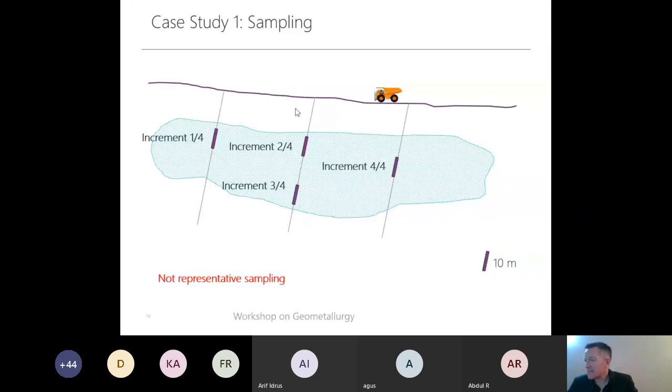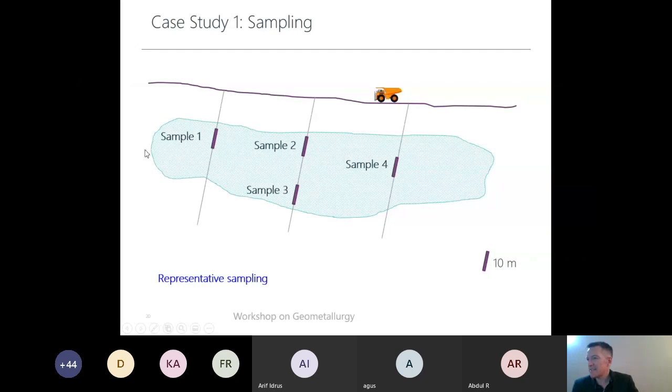This one is completely inconvenient for geometallurgy because in geometallurgy we want to identify the variability. Mixing different increments to create a sample is a very bad idea. This is typical of metallurgical testing, but never for geometallurgy. Finally, we could talk about representative sampling. In this case, different samples, well distributed in space, and same support, same size. This is something appropriate for our purpose.